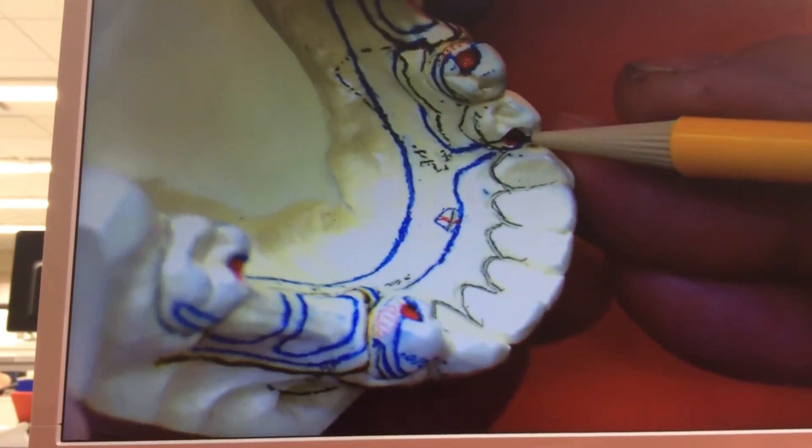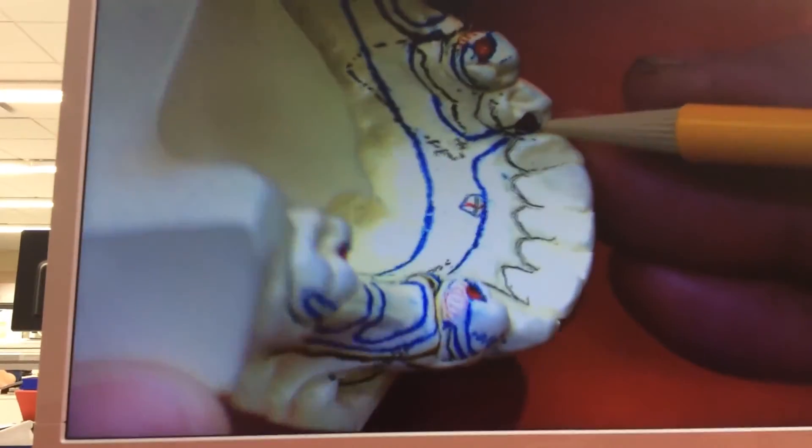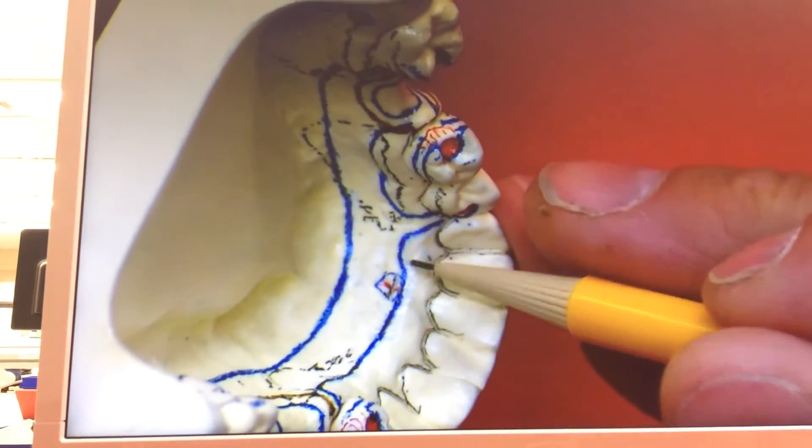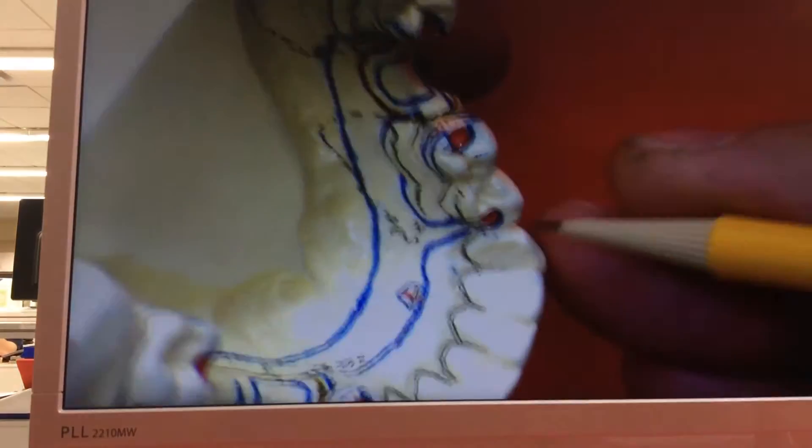When we come over here, this was an indirect retainer that wasn't necessary. You can put it there, it's not going to hurt anything. Dr. Smith may have been thinking, yeah I'll put a rest there because then if we ever lose this tooth, I'm one step closer to having this designed the way I need it.